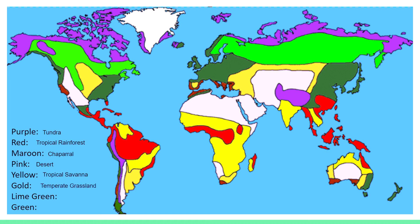Lime green is boreal forest. Green is temperate deciduous forest. Now take a second and find Virginia on this map. Which biome is Virginia in? That's right — the temperate deciduous forest. Temperate means it doesn't get too hot or too cold, and deciduous is the type of trees that lose their leaves in the winter.